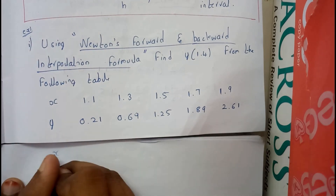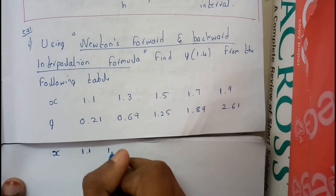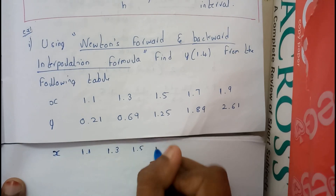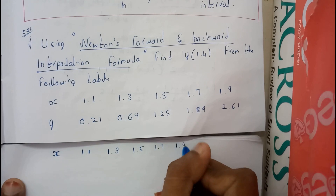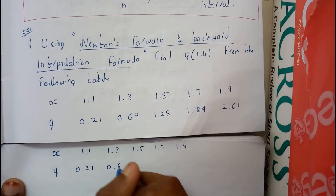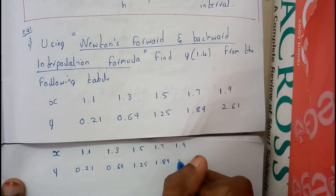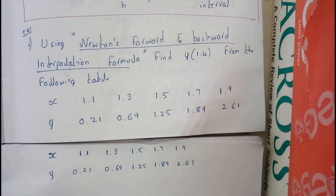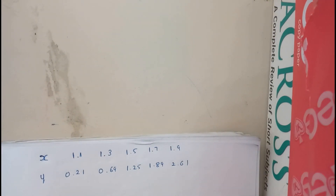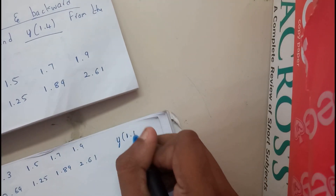From the question, the table given is: x = 1.1, 1.3, 1.5, 1.7, 1.9 and y = 0.21, 0.69, 1.25, 1.89, 2.61. We are asked to find y(1.4) — that's our main goal.